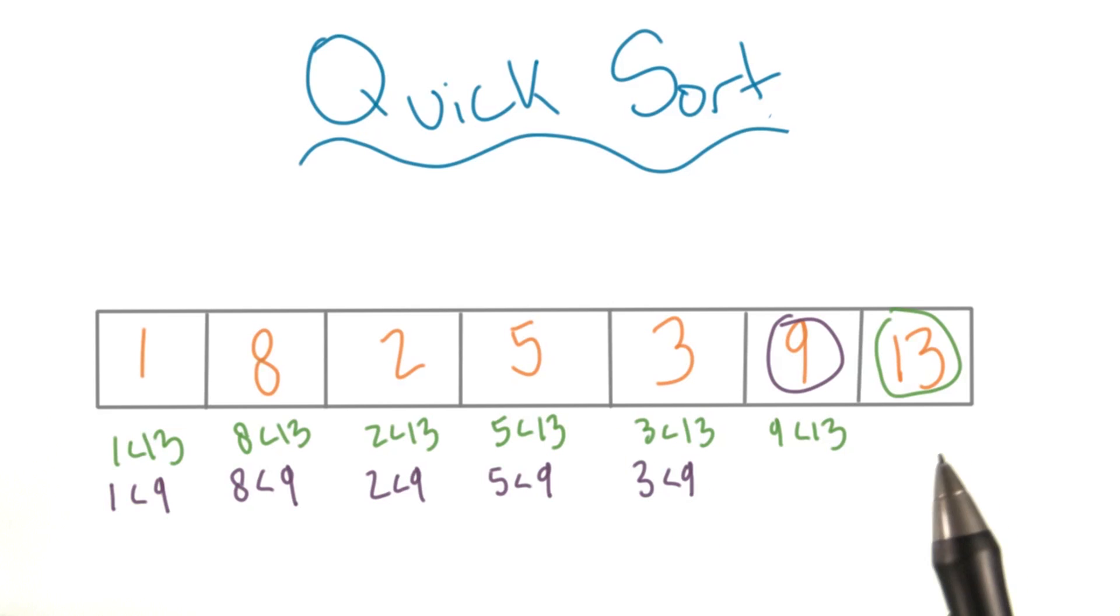Eventually we could leave off the ones that were at the end because we knew they were in the right place. The worst case of quicksort is exactly the same.